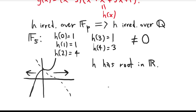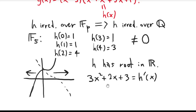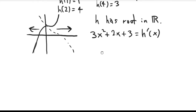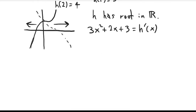If you do some calculus and take the derivative of h, the derivative is h′(x) = 3x² + 2x + 3. It's easy to show that this polynomial is always positive. So h is always increasing, which means not only does h have a real root, it has exactly one real root, because it has no turning points.